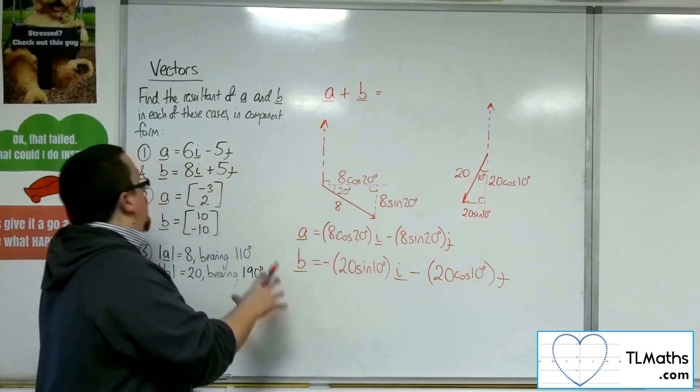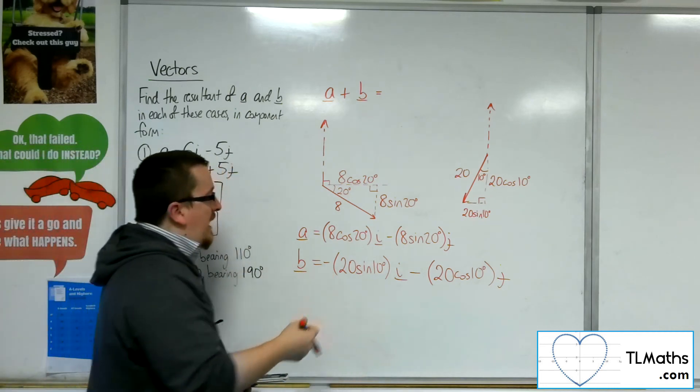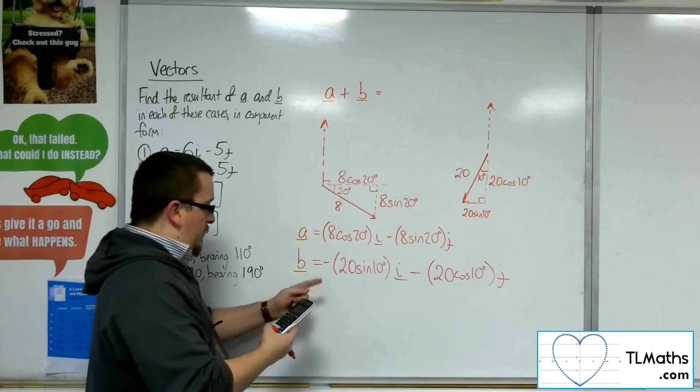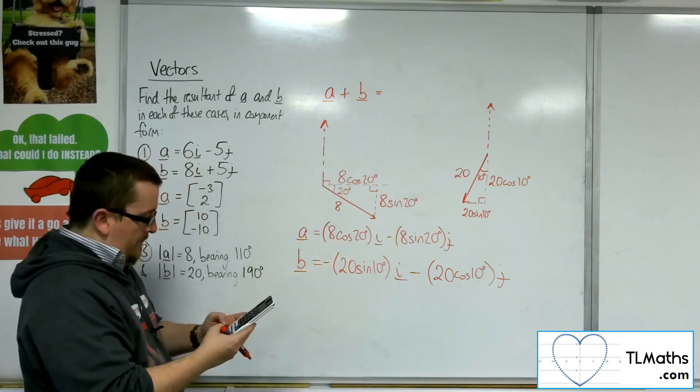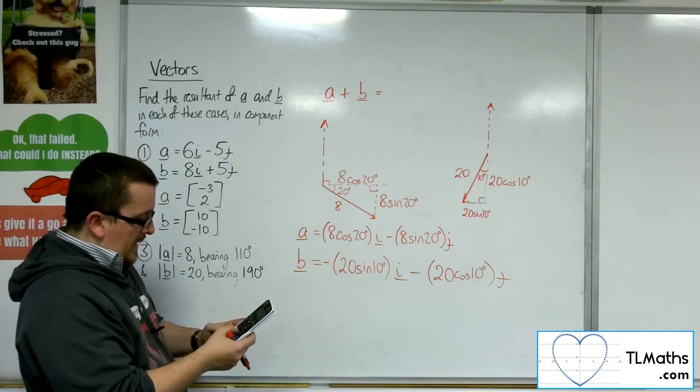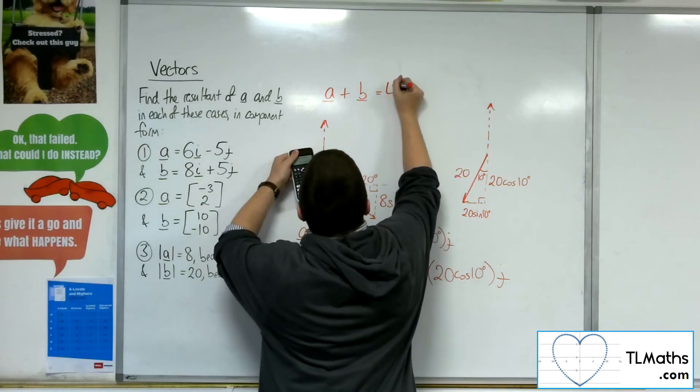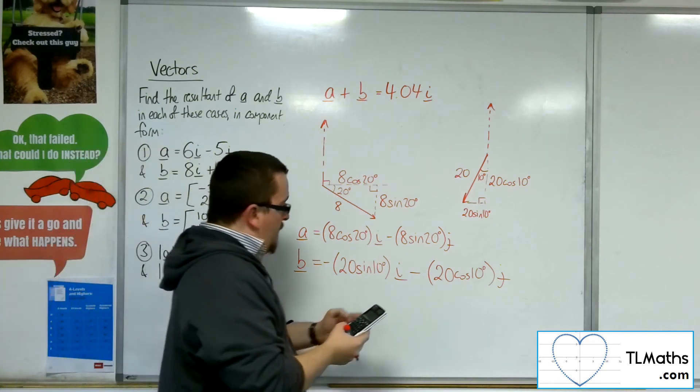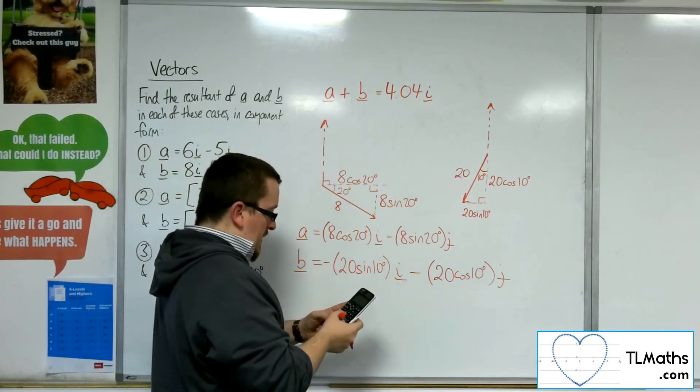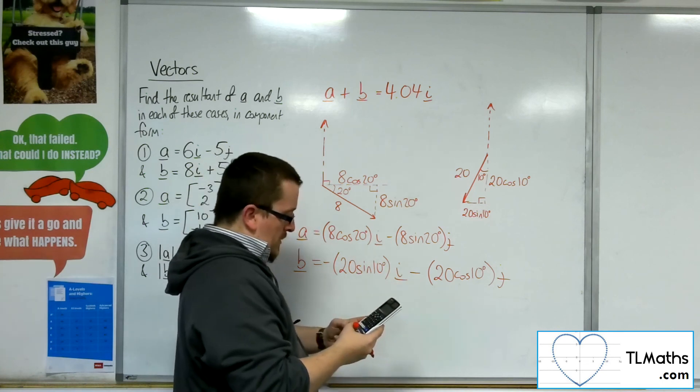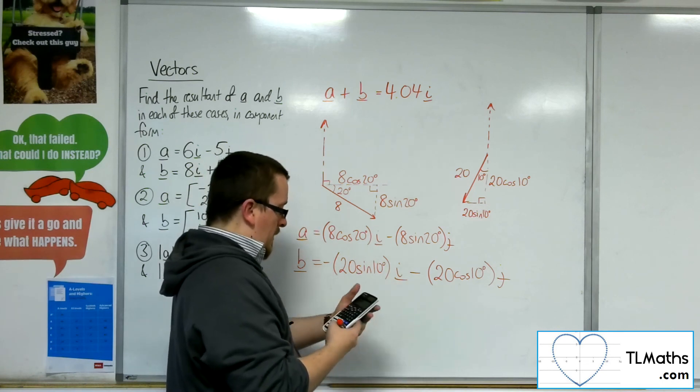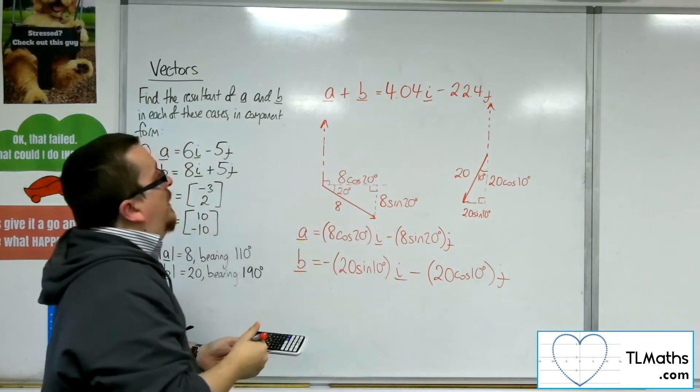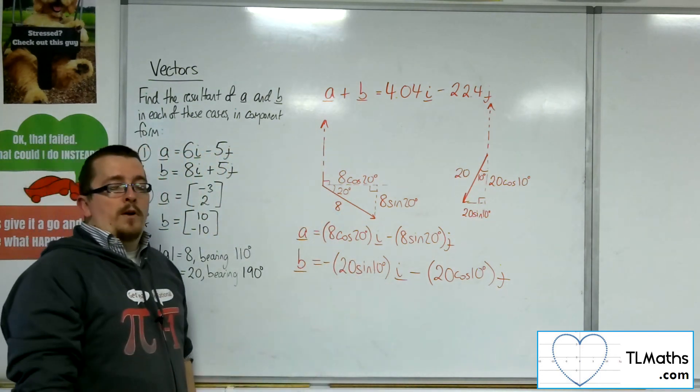So the resultant vector is adding these together. So I could write it in exact form, but I'll write it as to three significant figures. So 8 cos 20, take away 20 sine 10, and that gets me 4.04i, so three significant figures. And then we've got minus 8 sine 20, and then take away 20 times cosine of 10. And so that's minus 22.4j, the 3 sig fig. And so that would be the resultant vector in component form.